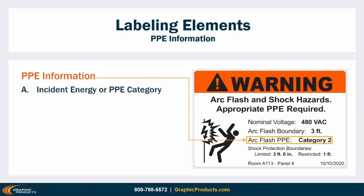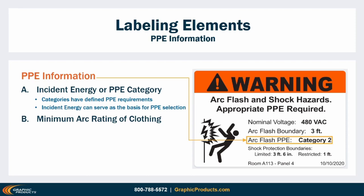The third requirement — at least one of the following — is a collection of ways to answer what PPE is needed. Option A is the most direct: if you used the PPE categories shortcut, you can show the PPE category for this equipment; if you calculated an incident energy value, you show that incident energy and the working distance it's based on. You won't use both options at the same time, and trying to show both on the same label is not allowed. Option B, the minimum arc rating, is a more user-oriented way to give PPE information. The arc rating of PPE indicates the maximum heat energy in cal/cm² that it can safely block or absorb, and all arc-rated PPE will be clearly marked with its arc rating number. This allows workers to compare the number on the label to the numbers on their gear.